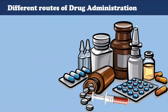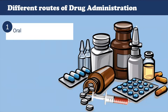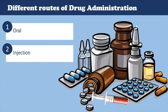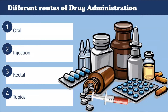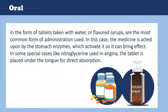Now let us take a look at the various ways in which drugs can be administered. First we have the oral route, then injections, rectal and topical. So let us dive into each of them and understand how these different drug administration methods work. The first is the enteral or oral drugs, which are normally taken as tablets or capsules.